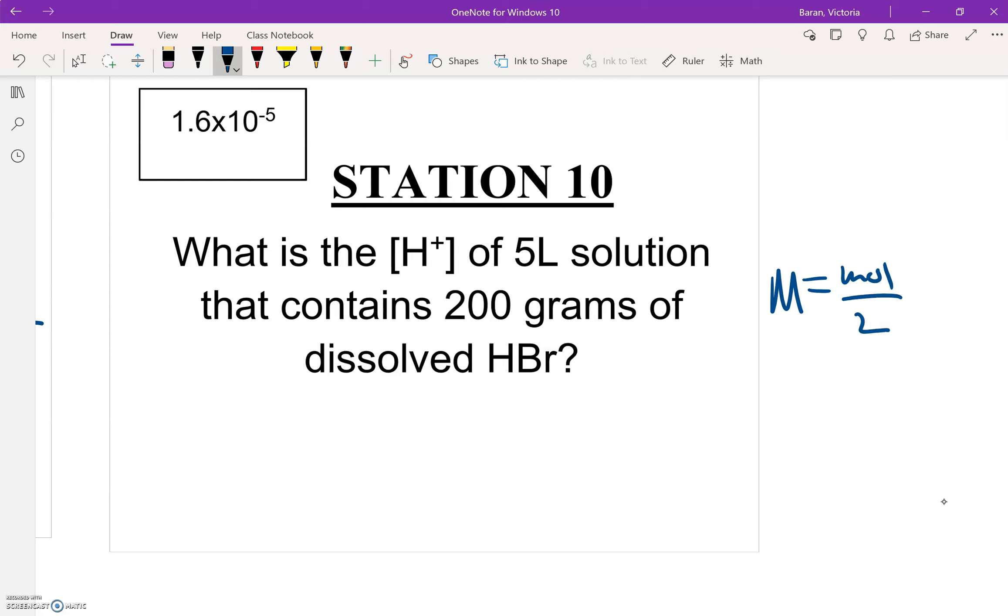So it says, what is the [H+] concentration? And this is the same thing as big M, which is molarity, which is concentration, of a 5-liter solution that contains 200 grams of HBr. Well, it's HBr, which is hydrobromic acid. That's an acid. So we don't have to use any of those special equations. So we have liters, which we know is going to go on the bottom, but on top, we're going to need moles. And they gave me 200 grams.